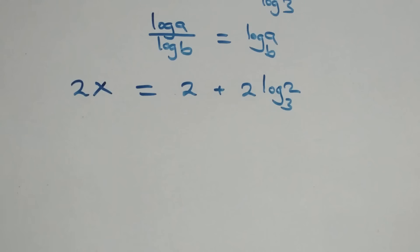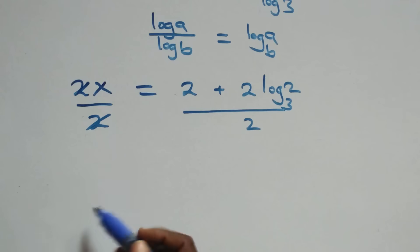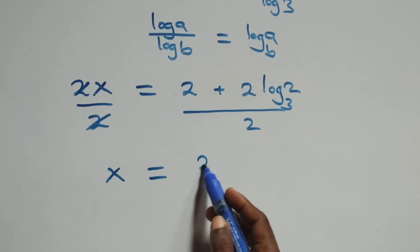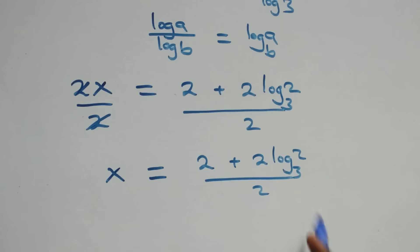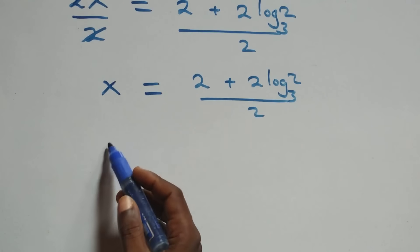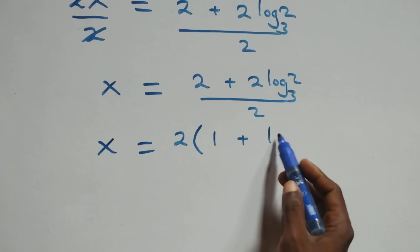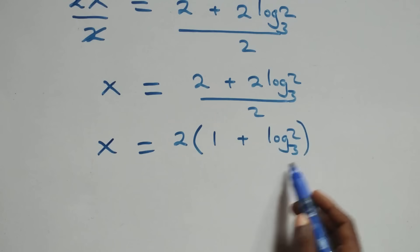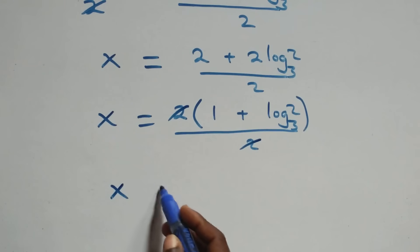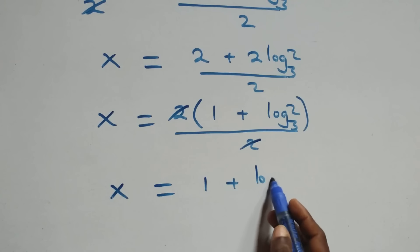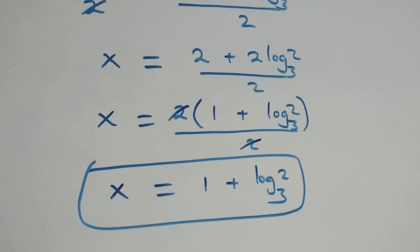The next step: divide both sides by 2. The 2s cancel each other, giving x equals to (2 plus 2·log₃2) over 2. Here 2 is a common factor, so x equals to 2·(1 plus log₃2) over 2. The 2s cancel and this becomes x equals to 1 plus log₃2. This is the value of x.